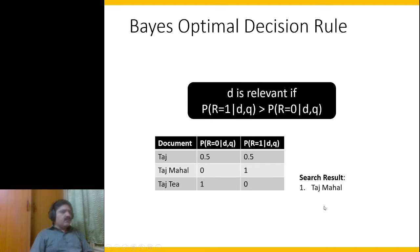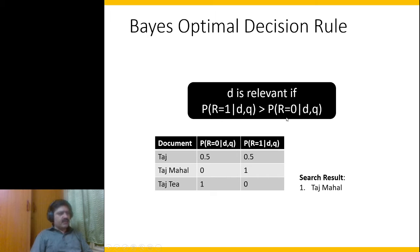The Bayes optimal decision rule adds one more criterion for ranking: a document d is relevant if P(r=1 | d, q) is greater than P(r=0 | d, q). This applies only for Taj Mahal where 1 is greater than 0. In all other cases the value is less than or equal to P(r=0), so the result only includes Taj Mahal.